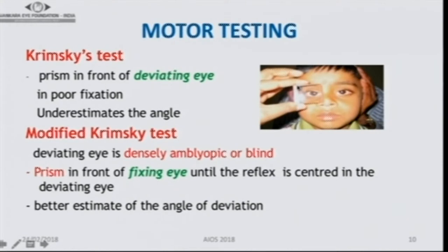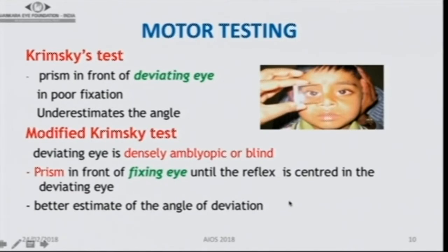Krimsky's test keeps the prism in front of the deviating eye and is based on the corneal reflex, especially done in children with poor fixation. The prerequisite for cover tests is that the child should have good visual acuity so there is a refixation movement — if vision is poor it cannot take up fixation. Krimsky's test underestimates the angle. In the modified Krimsky's test, the prism is placed in front of the normal eye, giving a better estimate of the angle, especially in densely amblyopic or blind eyes.